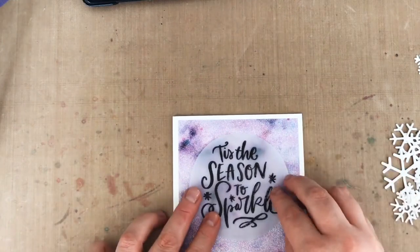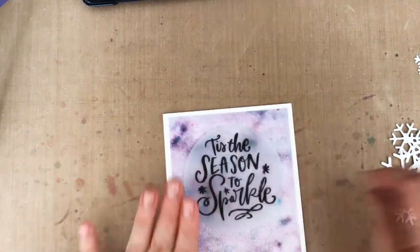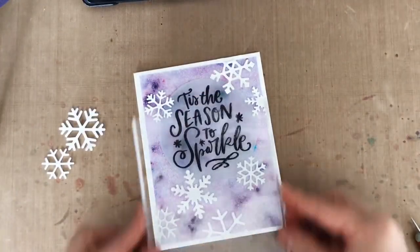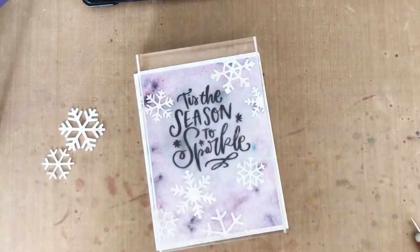So for the snowflakes, I just remove the sticky dot backing paper, place them down, and then I set the acrylic block on top for a good press to make sure they're stuck down.